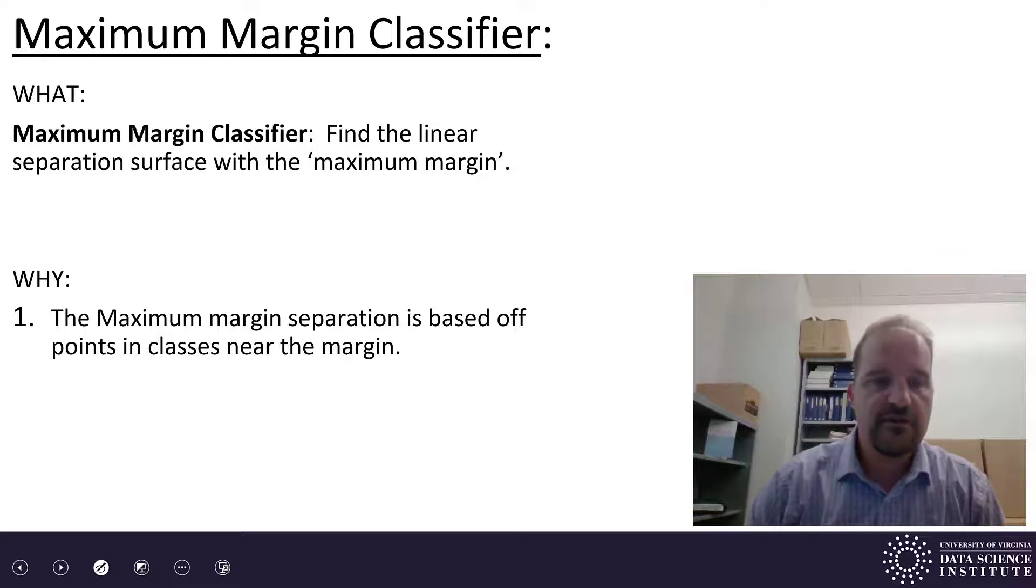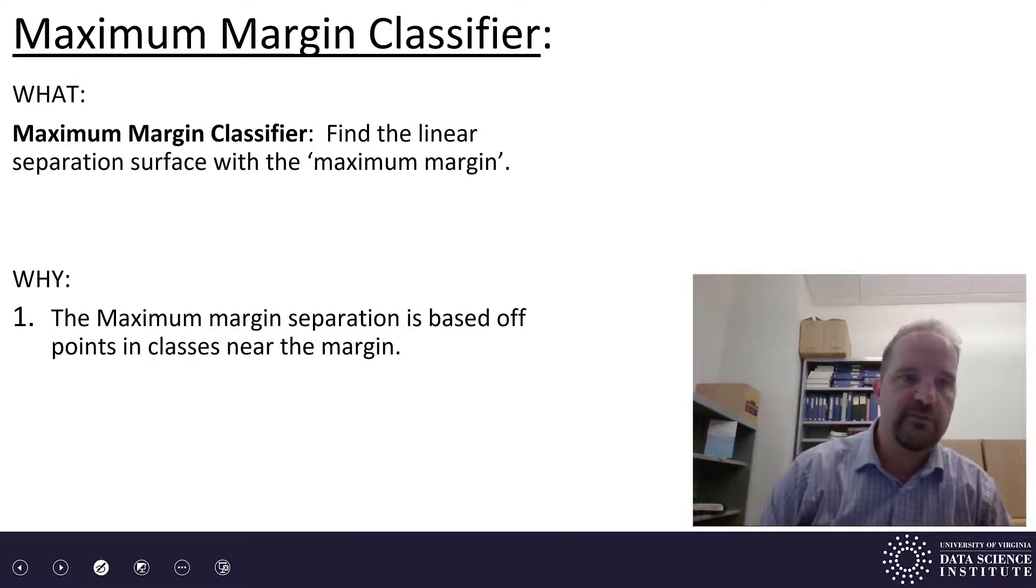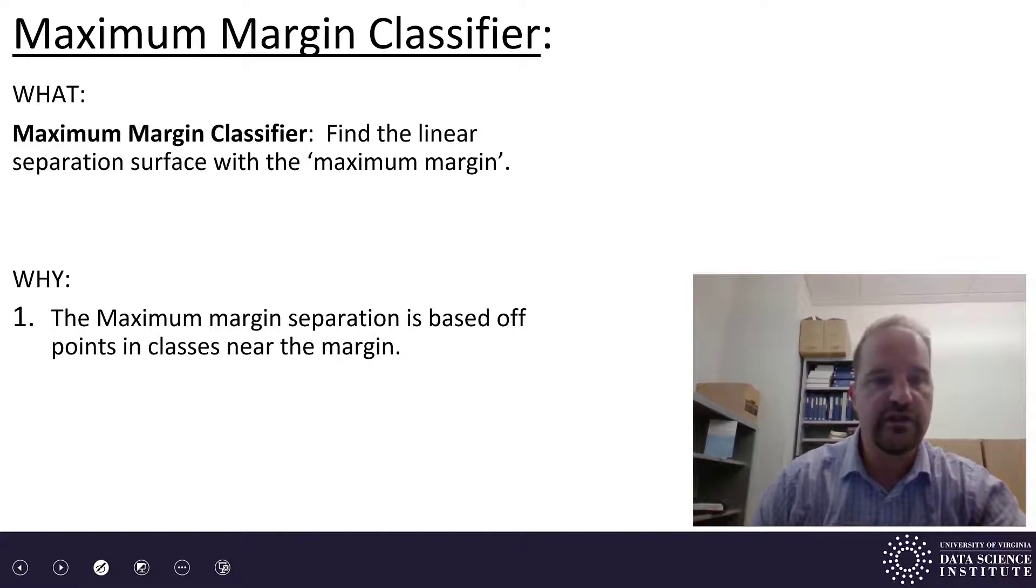The maximum margin separation is based off points in the classes near the margin. In a sense it optimizes by the things you need to separate. Those are philosophically for the maximum margin classifier the most important points, the ones that are near the border between the classes. So we're looking for separation based on those most important points.